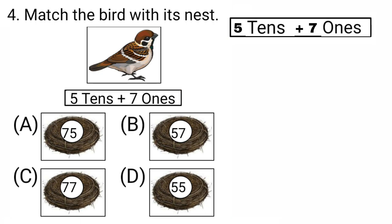7 ones is equal to 7. Yes, 7 ones is equal to 7. And 5 tens is equal to 50. So the number is 50 and 7: 57. So the nest must have the number 57.